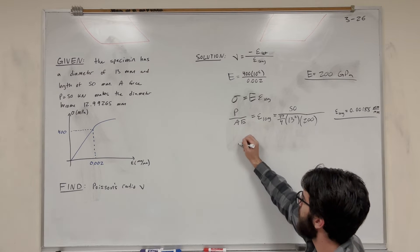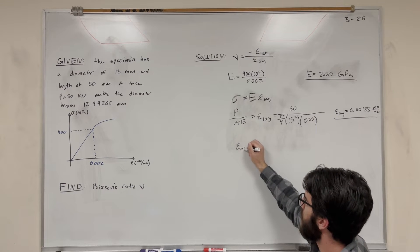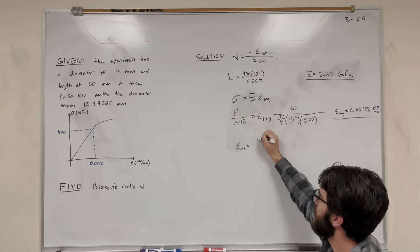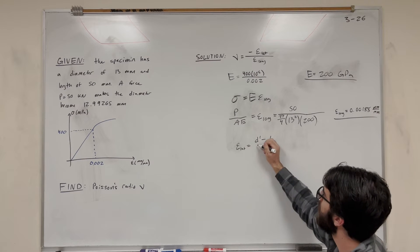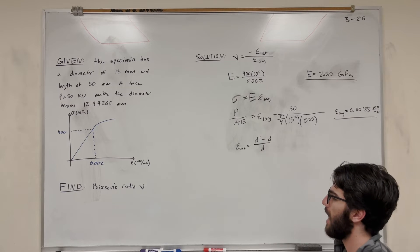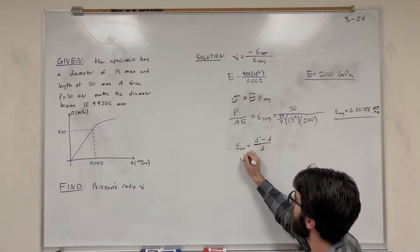So the equation for lateral strain itself, so we're solving for that here, is the change in diameter, which is D prime minus D, final minus initial, over the original diameter. So if we plug our numbers here...